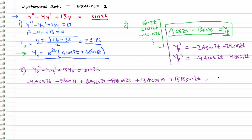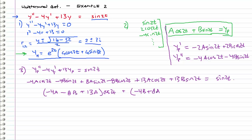All of this has to sum to sine of 2t. Collecting the cosine terms: negative 4a minus 8b plus 13a cosine 2t. Collecting the sine terms: negative 4b plus 8a plus 13b, all times sine 2t. This entire expression equals sine 2t.